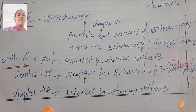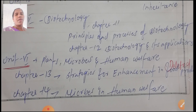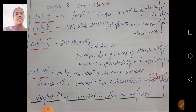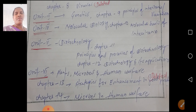Strategies for Enhancement in Food Production is the 13th chapter and is deleted. The 14th chapter is Microbes in Human Welfare. I am not a botany lecturer — I am only a vocational nursing faculty. That is the reason I have given this in a different format. I hope this video is helpful for the students. Thanks for watching my channel. Have a nice and beautiful day to everyone. Thank you.